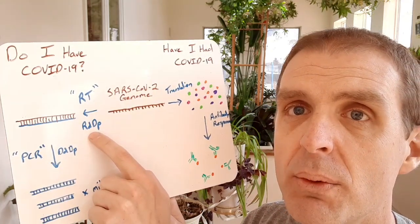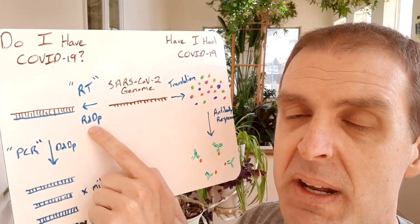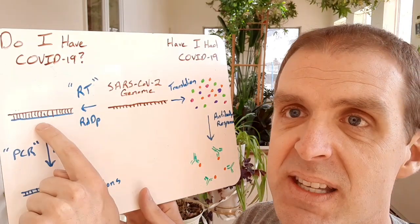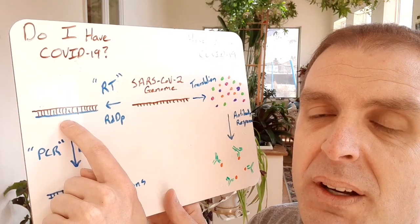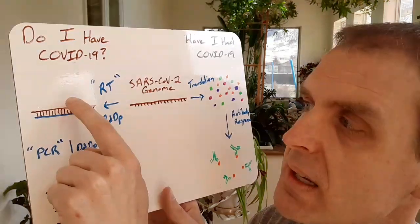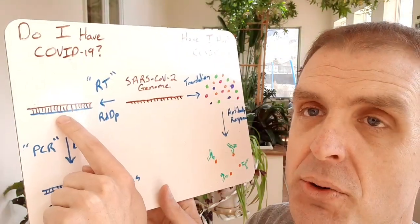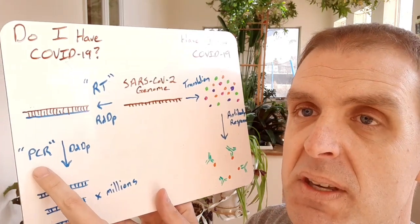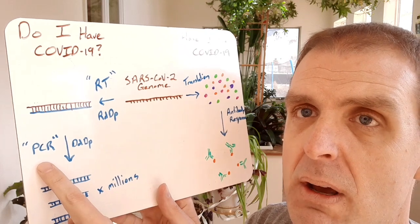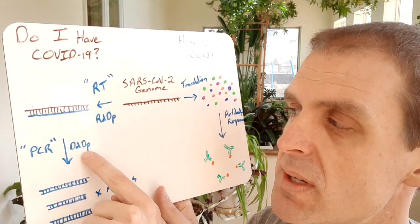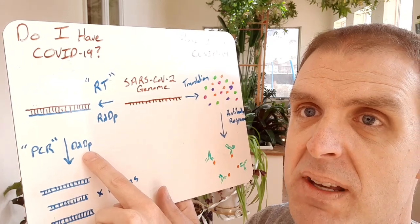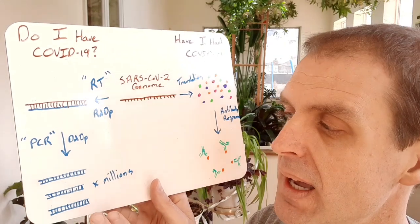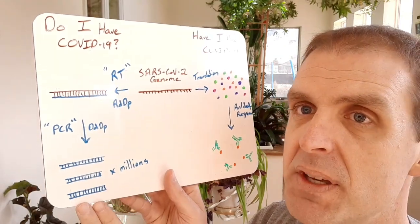RT stands for reverse transcription. That is an RNA-dependent DNA polymerase. It reads the RNA and then makes a second strand of nucleic acid called DNA, so you have an RNA-DNA duplex here. The second step after the RT is a PCR, polymerase chain reaction. I won't get into the details of that, but it uses a DNA-dependent DNA polymerase and a bunch of cycling reactions to copy and get more copies of the genome.